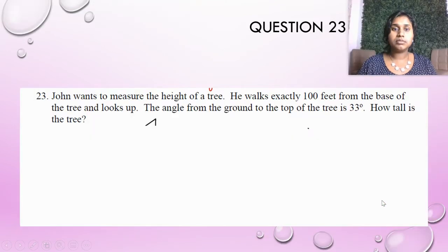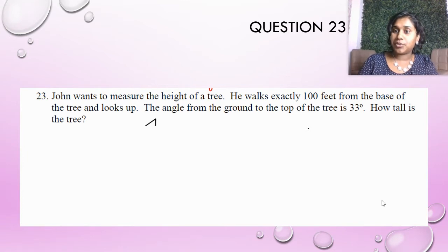John wants to measure the height of a tree. He walks exactly 100 feet from the base of the tree and he looks up. The angle from the ground to the top of the tree is 33 degrees. How tall is that tree?